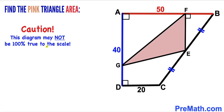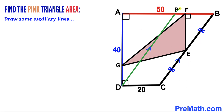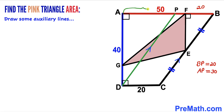Please keep in mind that the figure may not be 100% true to scale. Let's get started. In our first step, to make our job easier, we draw an auxiliary line PD that is parallel to line BC. Therefore segment BP equals side CD, which is 20 units. Since the whole length AB is 50, segment AP is 50 minus 20, giving us 30 units.